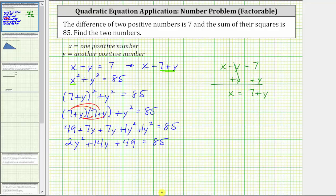Notice how we do have a quadratic equation. Let's set it equal to zero, and see if we can solve by factoring. To set the equation equal to zero, we subtract 85 on both sides. Simplifying, we have two y squared plus 14y. 49 minus 85 equals negative 36, and this is now equal to zero.